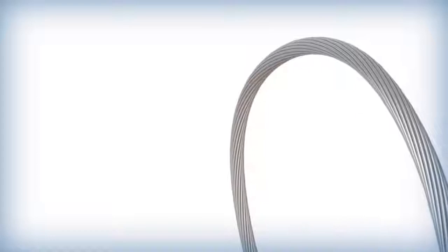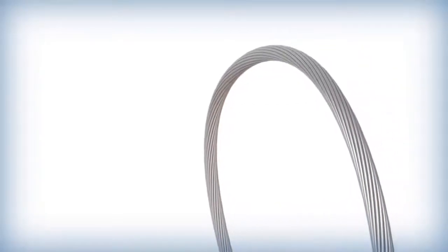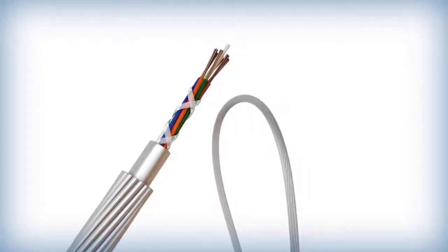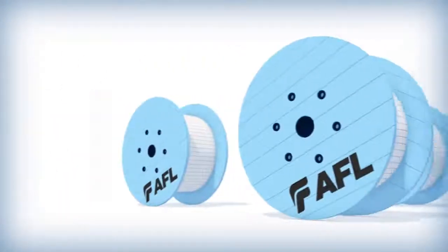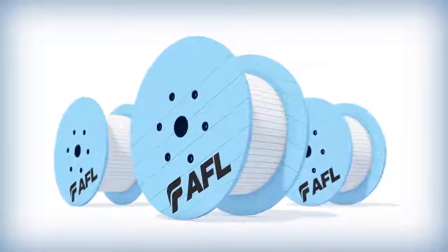During installations, care should be given to avoid tight bends and excessive tensions that could crush the OPGW's fiber bearing units. OPGW reels should always be in an upright position and never laid on their sides.